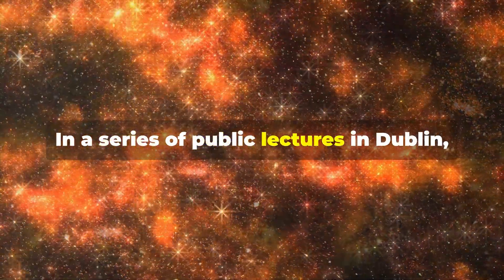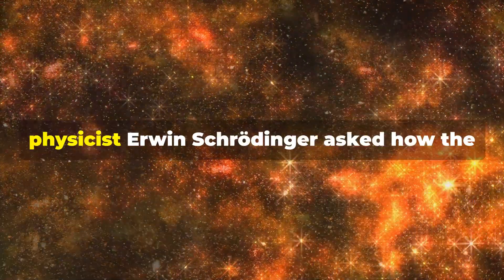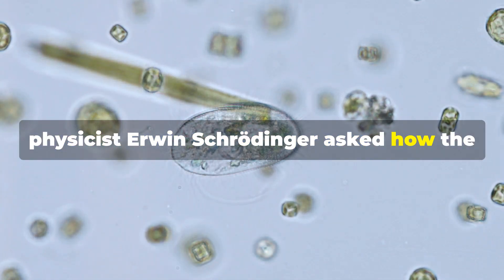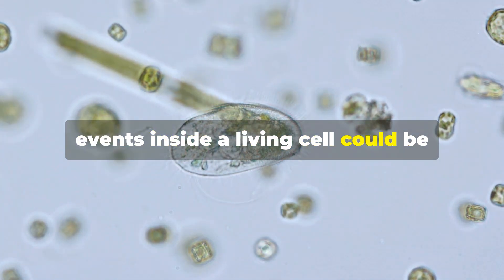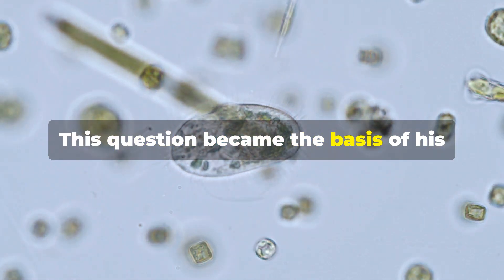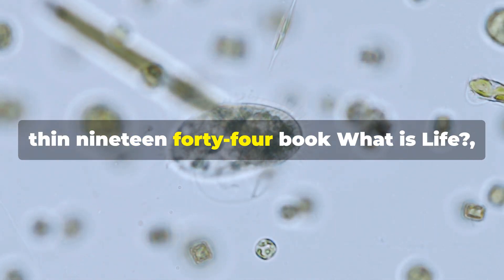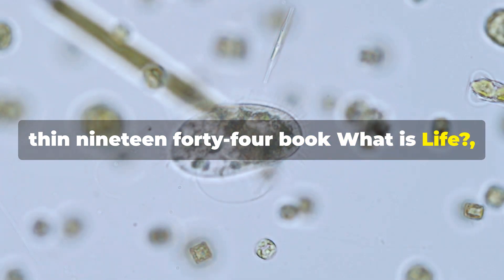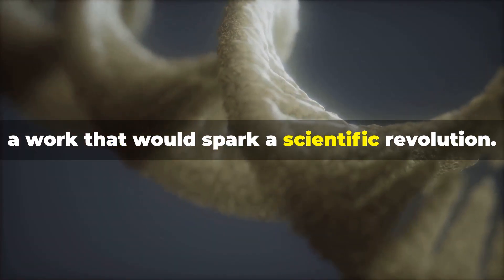In a series of public lectures in Dublin 1943, physicist Erwin Schrödinger asked how the events inside a living cell could be explained by the laws of physics and chemistry. This question became the basis of his thin 1944 book, What is Life, a work that would spark a scientific revolution.